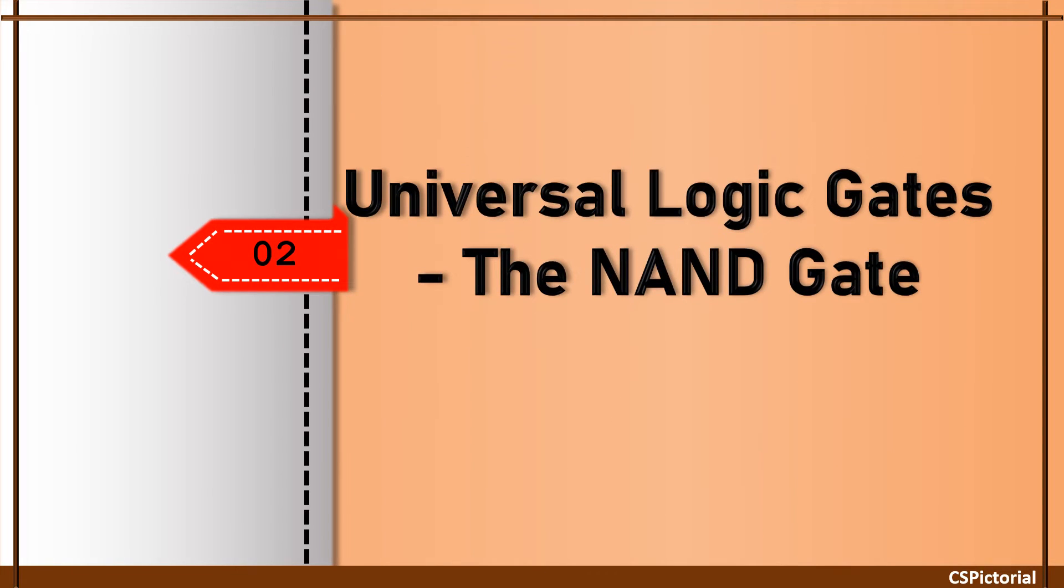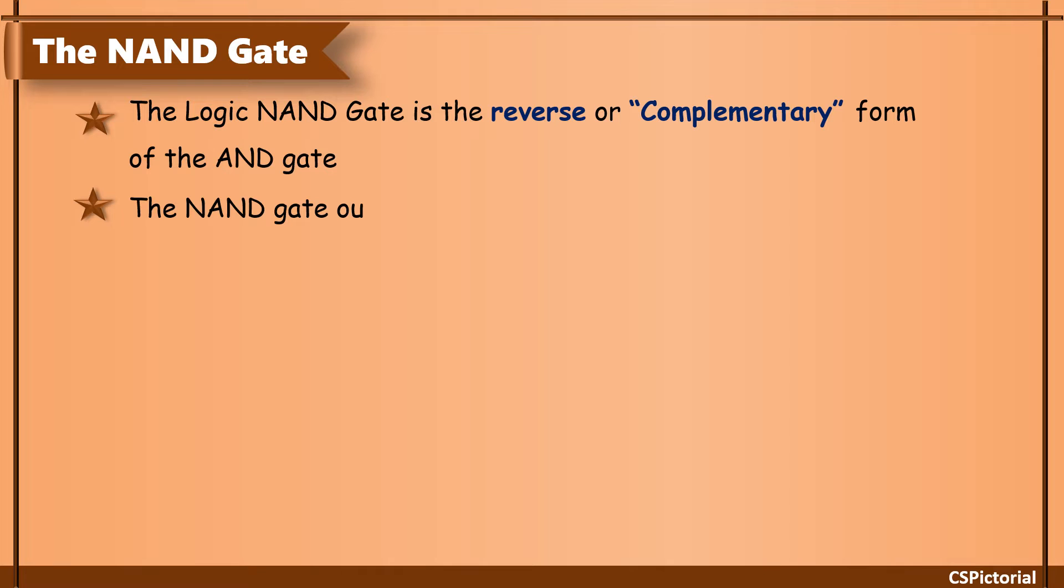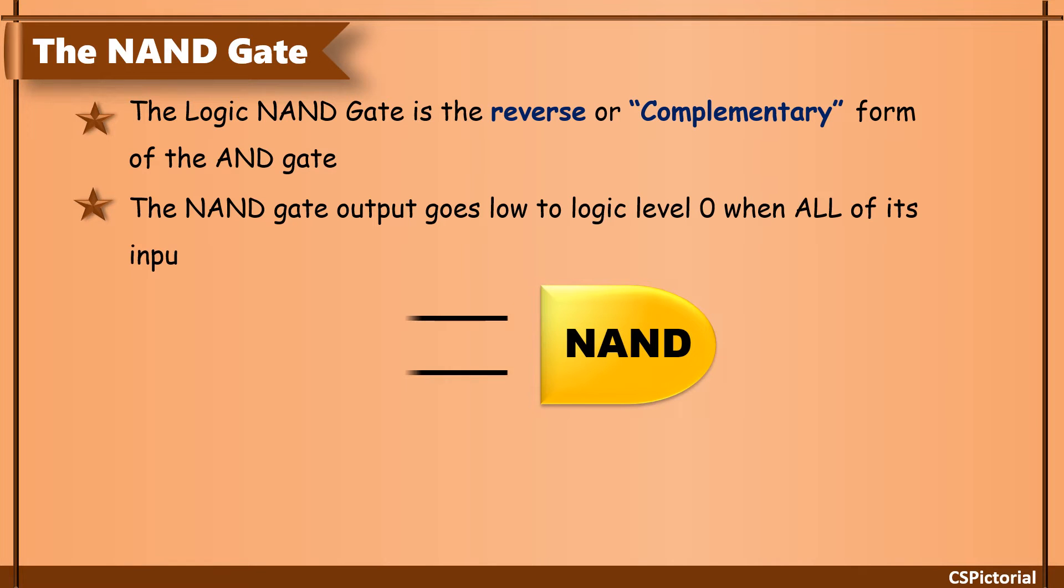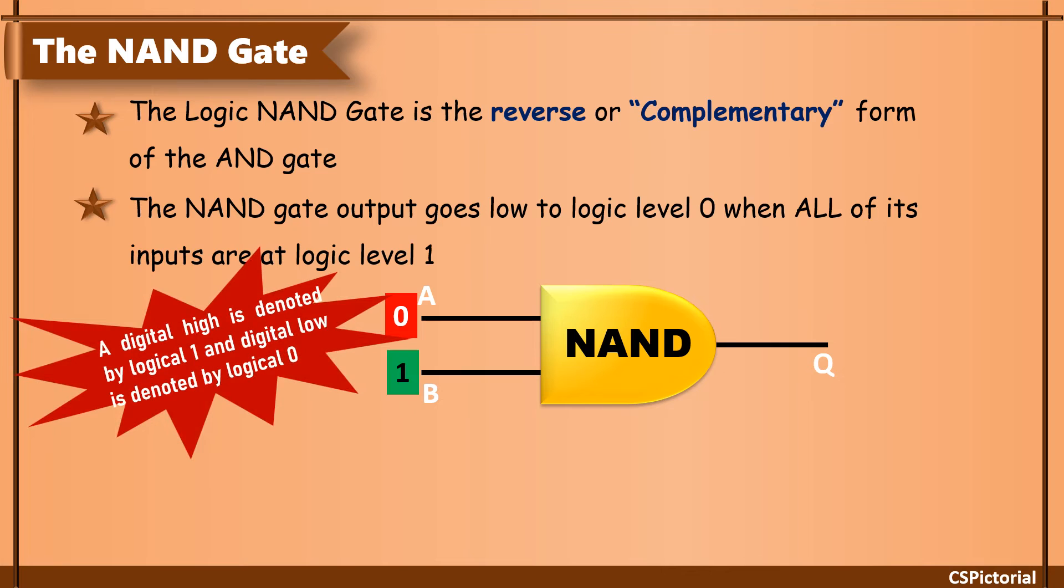The NAND gate. The NAND gate function is just the reverse of the AND gate. The NAND gate output is low only when all of its inputs are high. 1 denotes a high signal and 0 denotes a low signal.